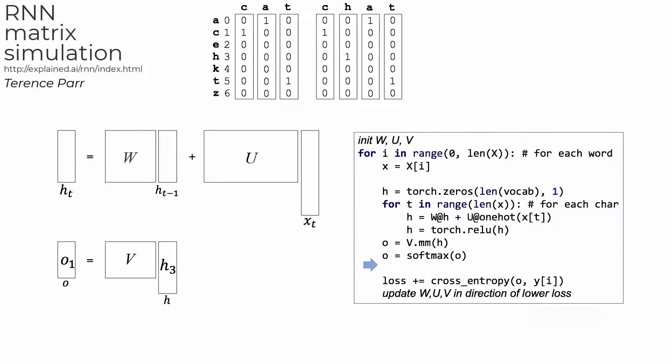Next, we calculate the loss and use PyTorch to update the model parameters W, U, and V in the direction that will lower the loss computation. H is not updated as part of this gradient descent operation because it's a temporary value and not one of the model parameters.